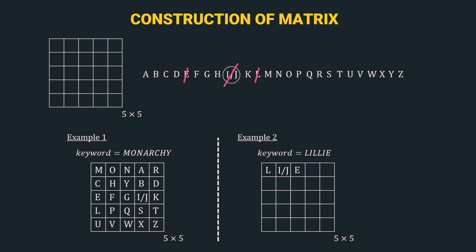We strike out L, I/J, and E, then fill the remaining matrix with the remaining alphabets in order: A, B, C, D, F, G, H, K, M, N, O, P, Q, R, S, T, U, V, W, X, Y, and Z. We have successfully completed step 1 — construction of the 5x5 matrix.